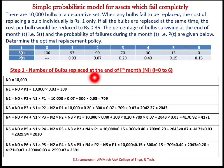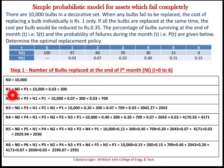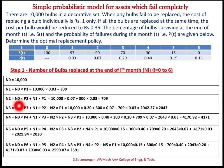Step one is to find the number of bulbs replaced at the end of each month based on probability ratios. N0 = 10,000 bulbs installed at present. N1, the number replaced at end of month 1, equals N0 × P(1) = 10,000 × 0.03 = 300. N2, the number replaced at end of month 2, is calculated as N0×P(2) + N1×P(1).